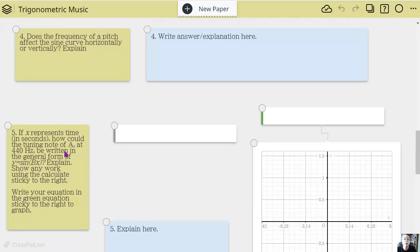Then they have to actually model: if you know that a tuning note of A is 440 Hertz, how does that get written in the general form of the equation? They do some calculations and substitute in to come up with the equation.